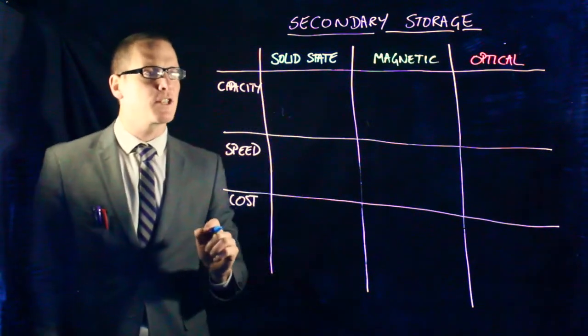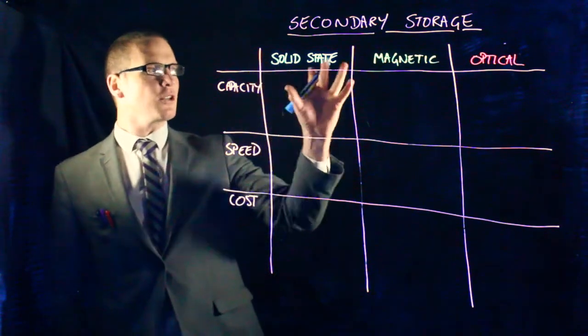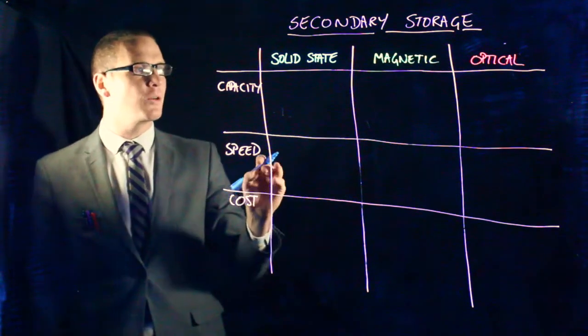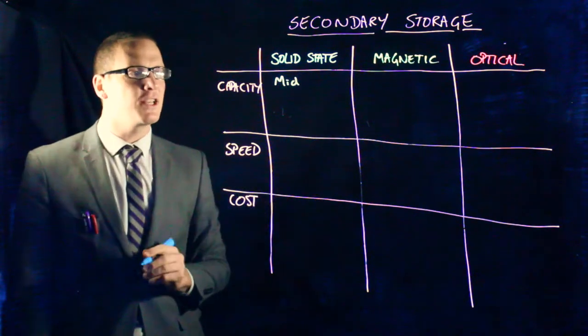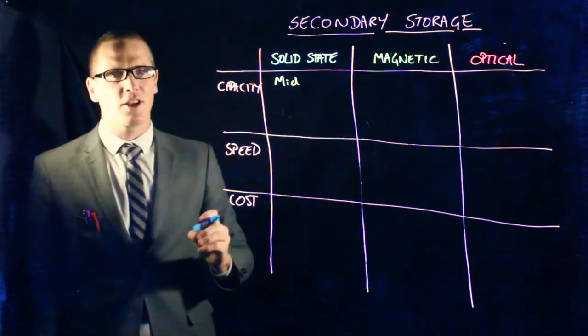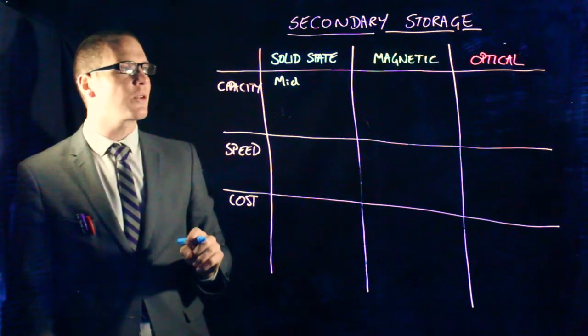So solid state, first of all. Capacity is increasing for solid state drives. It's not as big as magnetic, but it's comparable to optical, and so it's what we'd say mid-range in terms of capacity. You can get small solid state drives, 32 gig, 8 gig, 4 gig, small USB sticks, that sort of thing.